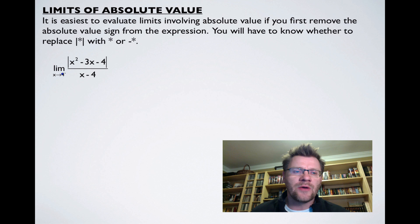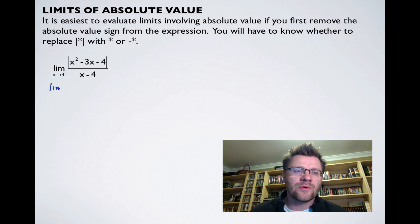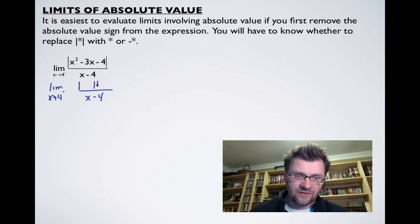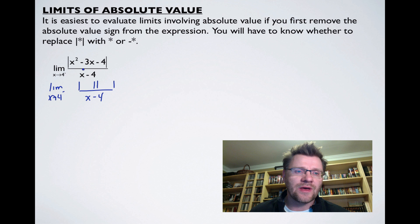We're looking at the limit as x approaches 4 from the negative side. We're going to factor the top, because right now if we plug in 4 in the bottom, we get a 0, and we can't have a 0 in the denominator. When we factor an absolute value expression, both factors remain inside absolute value.